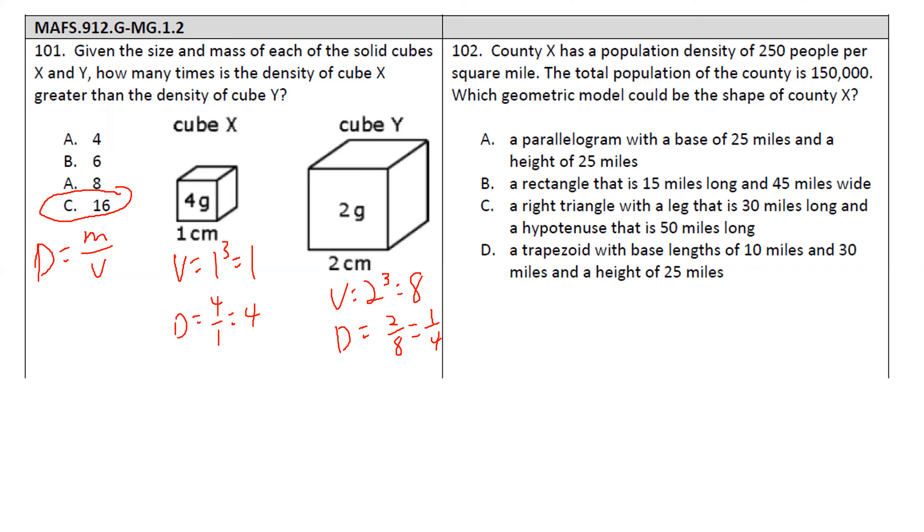And 102. Country X has a population density of 250 people per square mile. The total population of the country is 150,000. Which geometric model could be the shape of country X? So for each one of these, you would have to first find your area. So for A, we have a parallelogram. We're doing area equals base times height. So 25 times 25, which is 625. Divide 150,000 by 625, you get 240. It's close, but not quite.